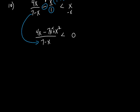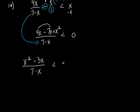So now let's see what we get. We can combine like terms. Put the x squared first — since it's an x squared I always like to put that first. Then 4x minus 7x is minus 3x. On the bottom is 7 minus x. Still less than 0. So now we've accomplished what we wanted: a 0 on the right-hand side and the left-hand side simplified to one numerator and one denominator.